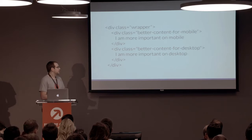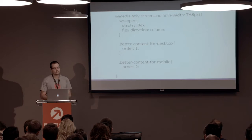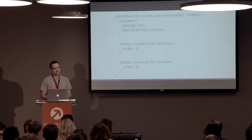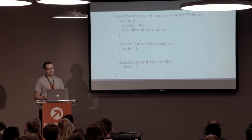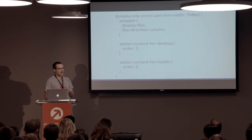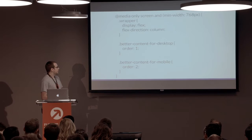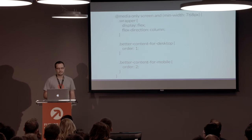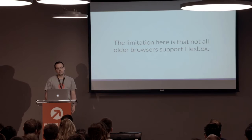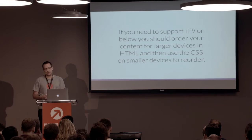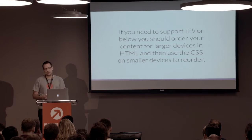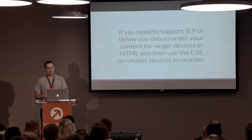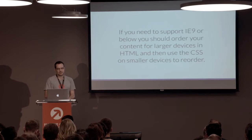Because we're typically building mobile first, we lead with our content ordered for mobile. In our CSS, we use a media query to specify that we're targeting devices over 768 pixels, tell our wrapper that the contents will be display flex, and set flex-direction to column. We then specify an order value on both classes to specify the order. The limitation here is that not all browsers support Flexbox, and there isn't a reliable polyfill. If you're supporting browsers like Internet Explorer 9 or below, your prioritization can be built desktop first while the rest of your site is still mobile first — because our mobile devices are now really powerful and we shouldn't always consider them the weakest.